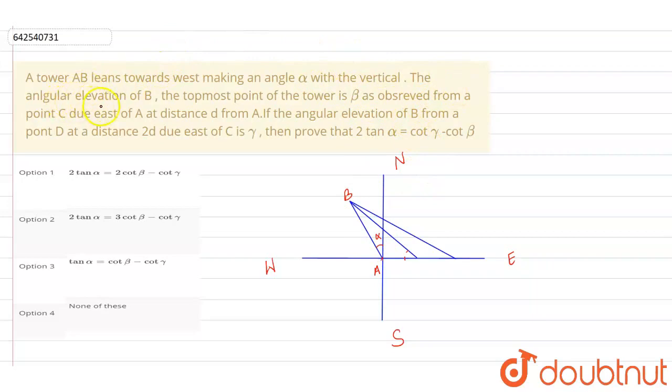Now next they are saying the angular elevation of B, the topmost point of the tower is beta, as observed from a point C due east of A at distance D from A. So they have given us a point C which is at a distance in the east of distance D from A. And they have given us this AC, this is distance D.